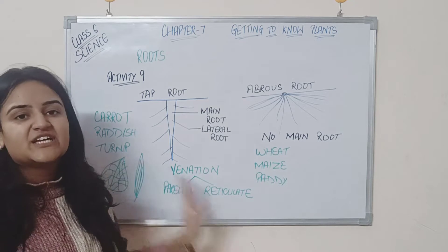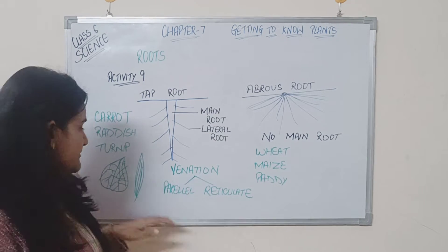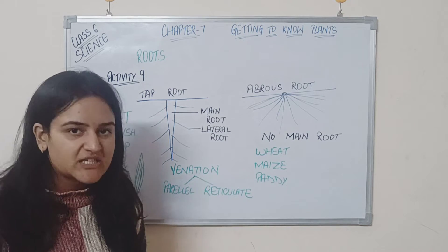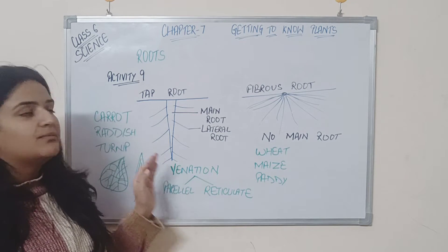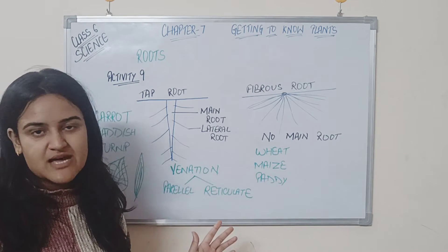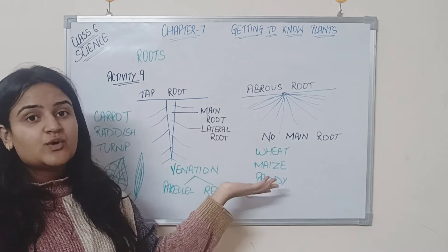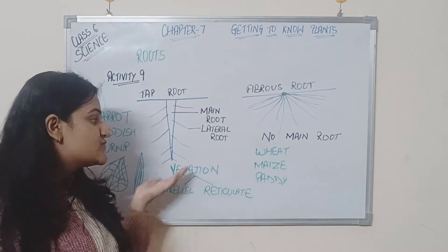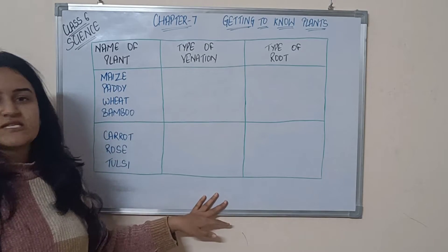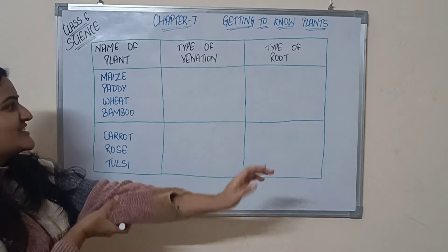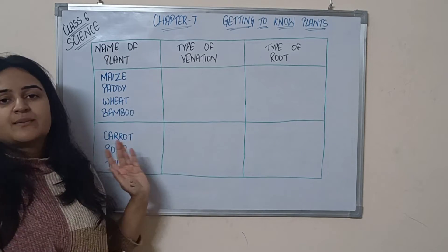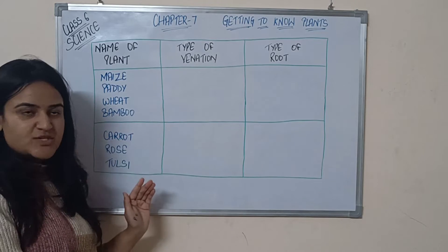Now we have to find the relation between the root system and venation. We are going to do it with an example that is already given in the NCERT. We are going to mark up the name of the plant, define what kind of venation these plants have, and then find a relation between which venation and which root system commonly coexist. This is a table given in NCERT: name of the plant, type of venation, type of root.